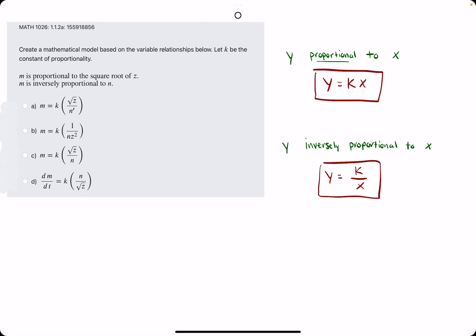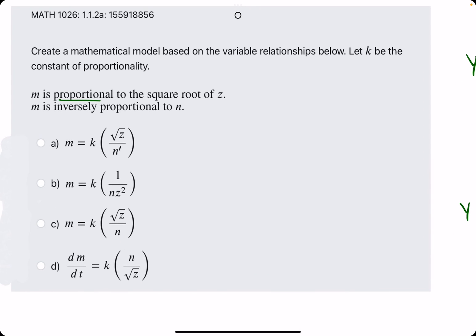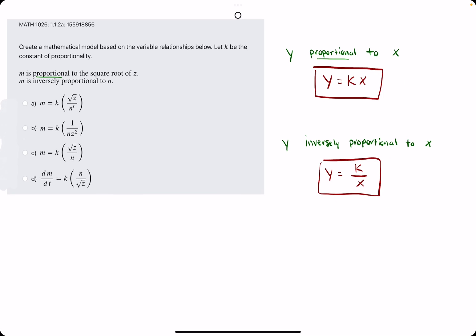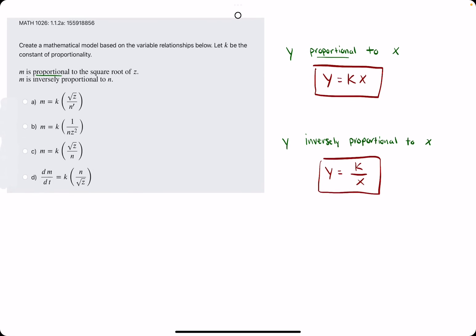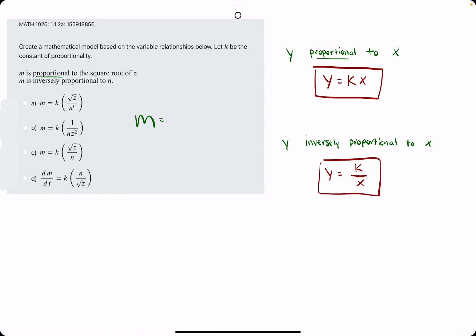They start by saying m is proportional to the square root of z, which means we can follow this format and say that m is equal to k. k is always in place. m is equal to k times the square root of z.